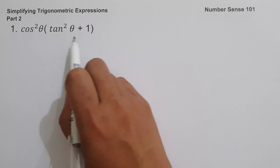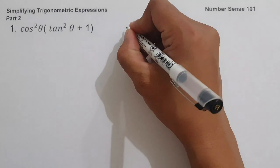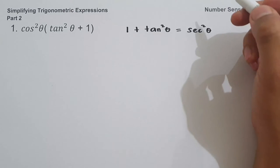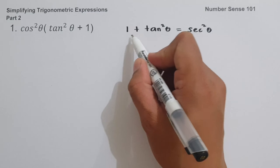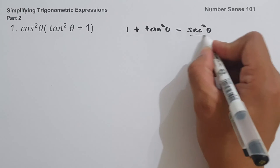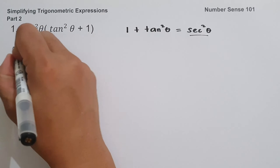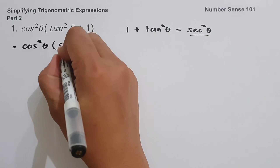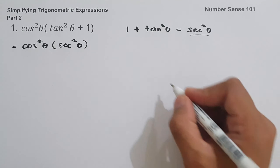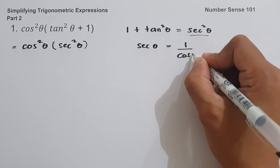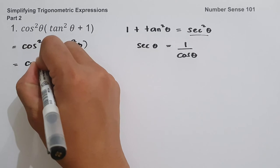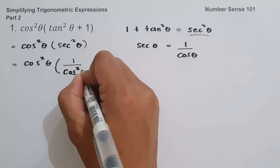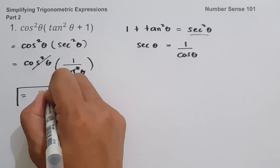In simplifying this trigonometric expression, we need to express each term in terms of sin and cos θ. We know that tan θ + 1 is the same as 1 + tan²θ, which equals sec²θ. So let us rewrite cos θ and change (tan θ + 1) to sec²θ. Since the reciprocal of sec θ is 1/cos θ, we rewrite this as cos θ times 1/cos²θ. We can cancel cos θ, and the answer is 1/cos θ.